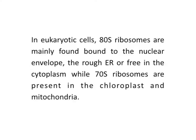In eukaryotic cells, 80S ribosomes are mainly found bound to the nuclear envelope, the rough endoplasmic reticulum, or free in the cytoplasm, while 70S ribosomes are present in the chloroplasts and mitochondria. The organelles serve as the protein synthesis machinery of the cell and are more abundant in cells that are active in protein synthesis, such as pancreas and brain cells. Ribosomes carry out protein synthesis in assistance with two other kinds of RNA: the messenger RNA or mRNA and transfer RNA or tRNA.